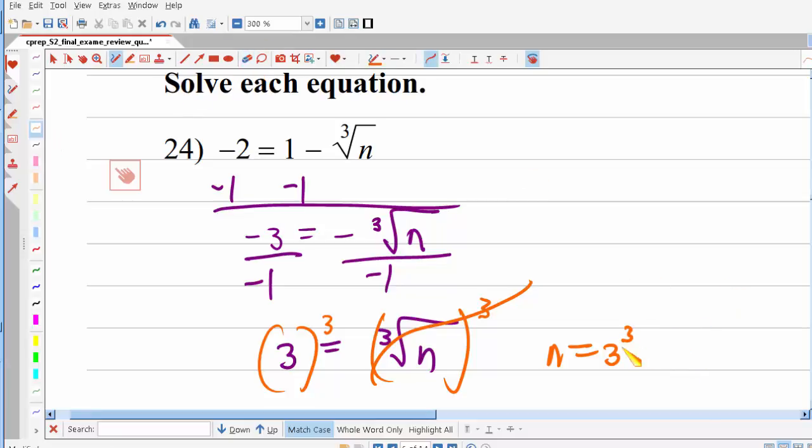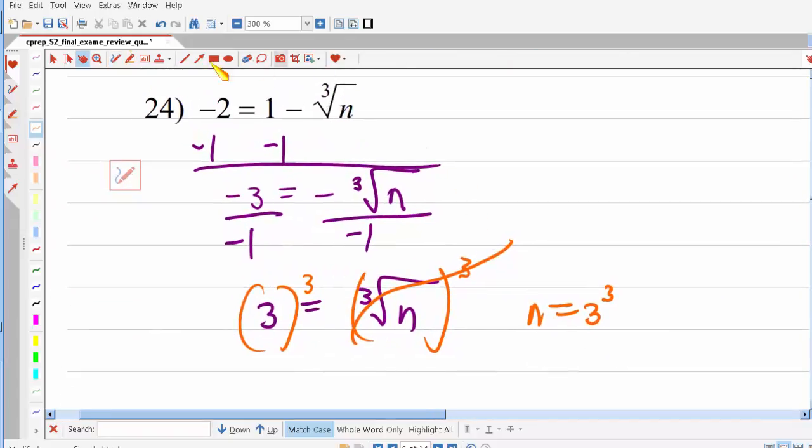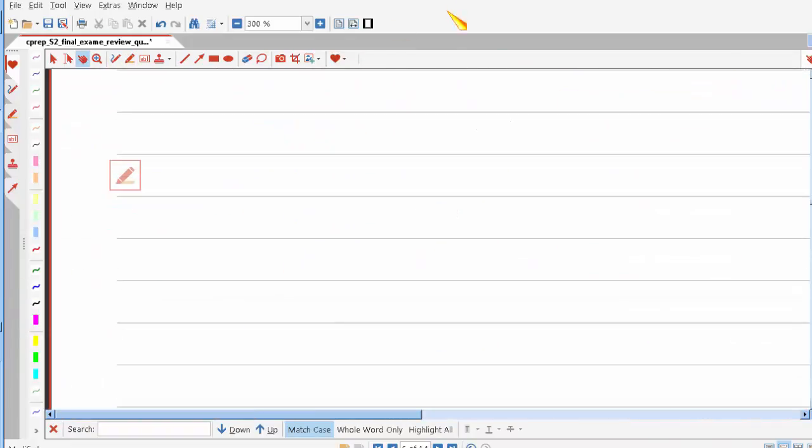Now, you don't need to check for extraneous solutions if you have an odd power, because you can take the radical, negative signs allowed underneath a radical with an odd index, not an odd power. Okay, so let's see, are there any more on this side? Alright, let's do 25.